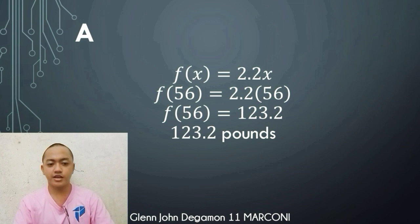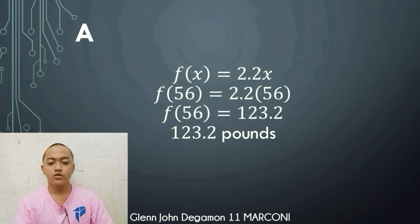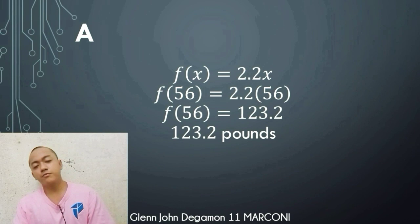For number ten, this equation converts x kilograms into f of x pounds, where f of x equals 2.2x. For letter a, converting 56 kilograms into pounds: f of 56 equals 2.2 times 56 equals 123.2. Therefore, 56 kilograms equals 123.2 pounds.